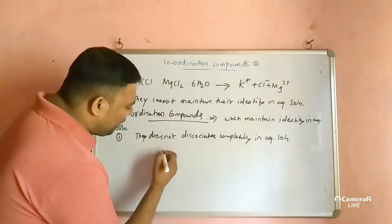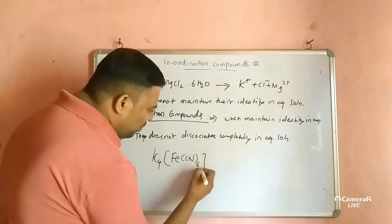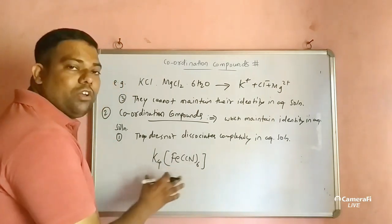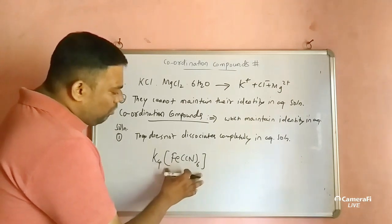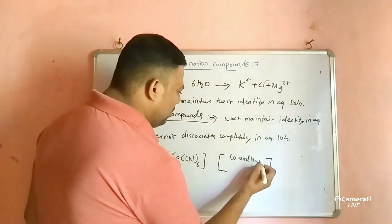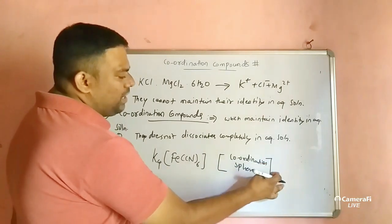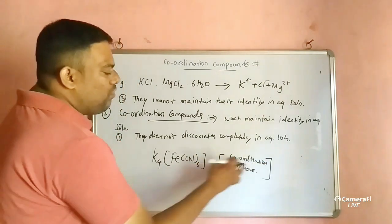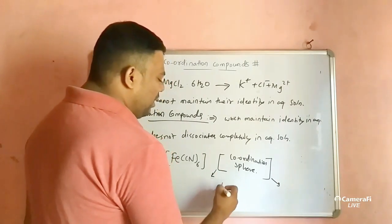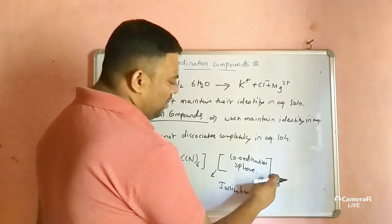Take the example of K₄[Fe(CN)₆]. Whatever is inside the square bracket, we call it the coordination sphere. Outside the square bracket, we call it the ionization sphere. The metal ion is directly bonded inside the coordination sphere.